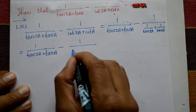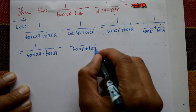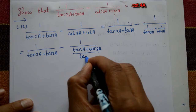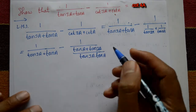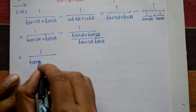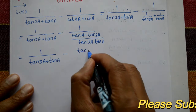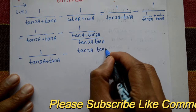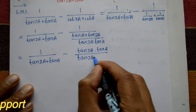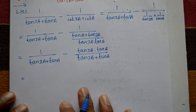Now taking the LCM of the second term's denominator: 1/tan(3a) plus 1/tan(a) gives us (tan(a) plus tan(3a)) divided by tan(3a) times tan(a). So the expression becomes: 1 upon tan(3a) plus tan(a), minus tan(3a) times tan(a) divided by tan(3a) plus tan(a). Now both terms have the same denominator.